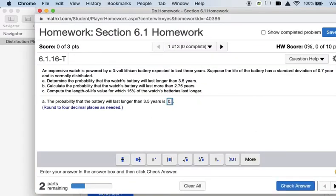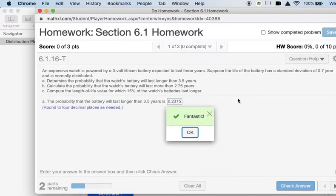Make sure that you round the way that MyLab is asking you to round. In this case, they want 4 digits after the decimal point.